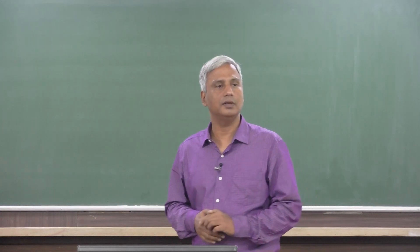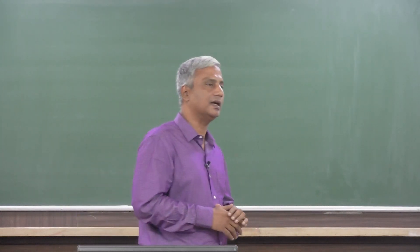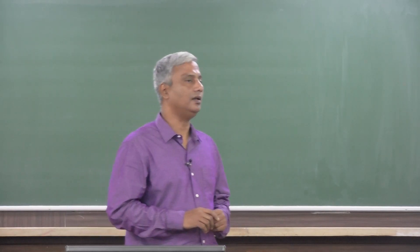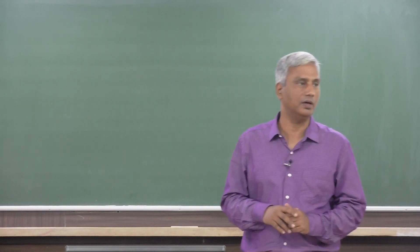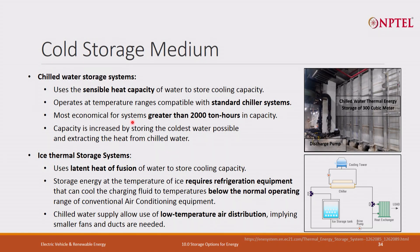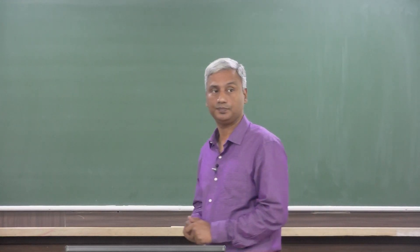The return water temperature is 20 degrees, meaning if my whole tank is at 6 degrees, whenever I have excess renewable energy I can circulate this chilled water to the whole building for the HVAC unit and the return water temperature comes to 20 degrees. The energy storage capacity is: E = m · cp · ΔT, where mass of water is 3 lakh kg, cp of water is 4.2 kJ/kg/°C, and ΔT is the difference between return water temperature of 20 degrees and storage temperature of 6 degrees, giving 14 degrees. Multiplying all those values gives the thermal energy storage capacity.